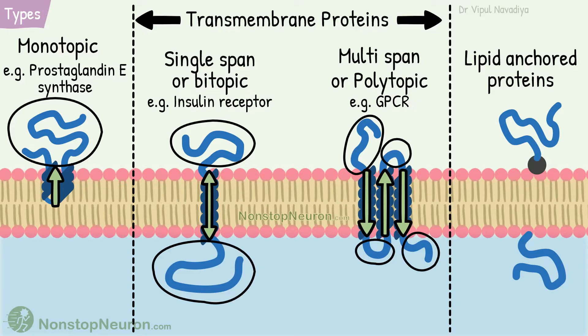Now the third subtype: lipid-anchored proteins. These proteins are not truly embedded in the membrane. Instead, they are attached to a lipid molecule embedded in the bilayer. This binding is covalent, making it difficult to remove them. Examples include proteins attached to glycosyl phosphatidylinositol in the outer leaflet, and proteins with direct linkage to fatty acid in the inner leaflet.